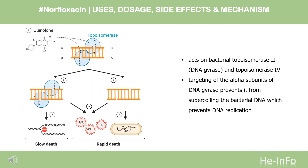Mechanism of Action. The bactericidal action of norfloxacin results from inhibition of the enzymes topoisomerase 2 (DNA gyrase) and topoisomerase 4, which are required for bacterial DNA replication, transcription, repair, and recombination. Norfloxacin is a broad-spectrum antibiotic agent shown to be effective against various gram-positive and gram-negative bacterial species. The fluorine atom at the 6 position increases potency against gram-negative organisms, and the piperazine moiety at the 7 position is responsible for antipseudomonal activity.